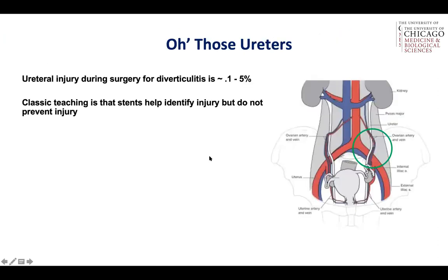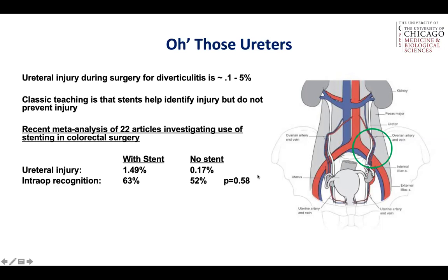Those ureters — when you're in the pelvis, that's what's really on everybody's mind. It is rare to injure the ureters, but it certainly does happen. Ureteral injury is estimated at 0.1 to 5%. The most common place for diverticulitis is right over the pelvic brim, where sigmoid inflammation is plastered and requires significant dissection to free it up, with the ureter sitting right underneath. The classic teaching is that stents help identify injury but not prevent it. A recent meta-analysis of 22 articles on stenting in colorectal surgery found that with a stent, ureteral injury was about 1.5%, while without a stent it was 0.17%.